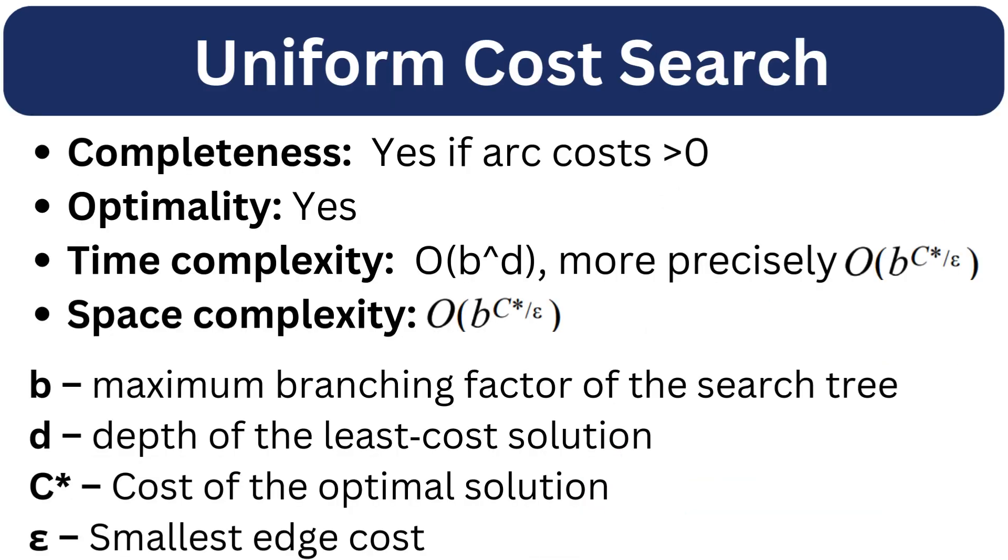Now let's discuss the properties of the uniform cost search. Uniform cost search is complete if the arc costs are positive. It is optimal, UCS always finds the least cost path. Its time complexity is exponential, where b is the branching factor, C* is the cost of the optimal solution and ε is the smallest edge cost. The space complexity is same as the time complexity, due to storing all the paths in the memory.